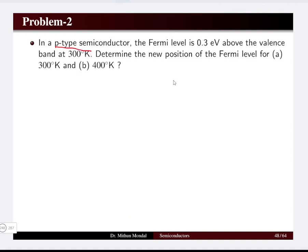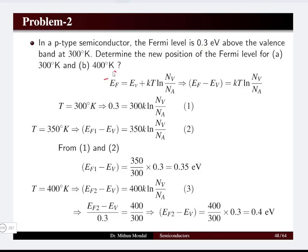The next problem is for a p-type semiconductor, where the old Fermi level is 0.3 electron volts above the valence band energy Ev at a temperature of 300 K. Determine the new position at two different temperatures: 350 K and 400 K. For the p-type semiconductor, the Fermi level equation gives Ef − Ev = kT · ln(Nv/Na), where Na is the acceptor impurity atom concentration.